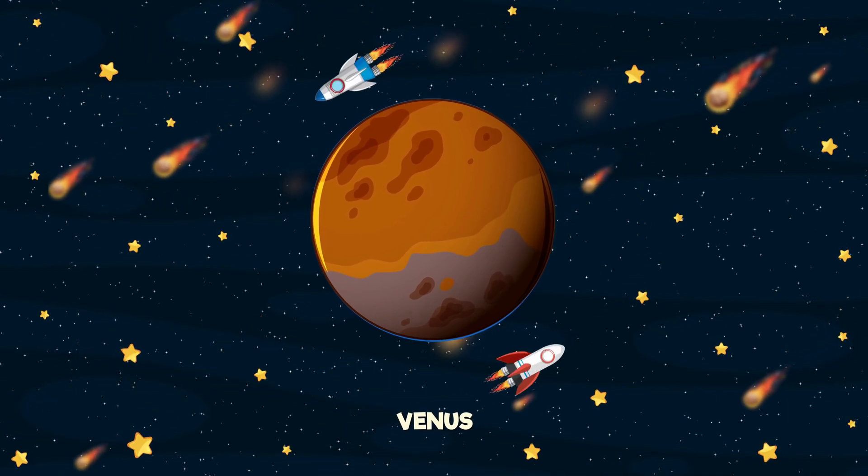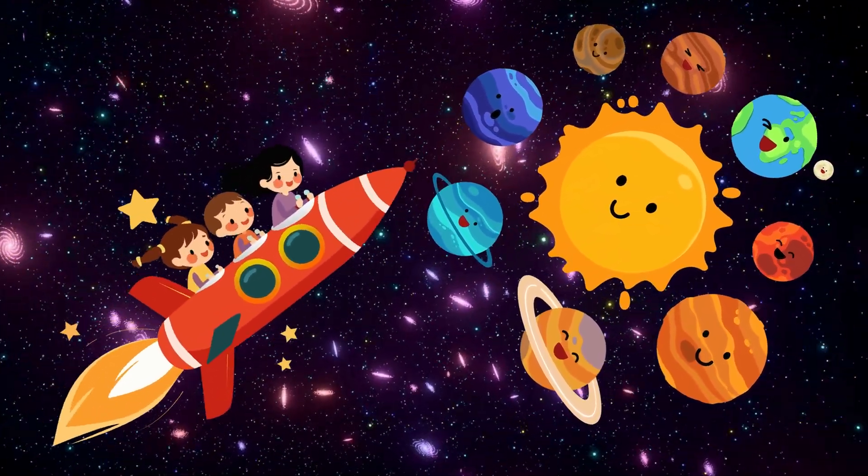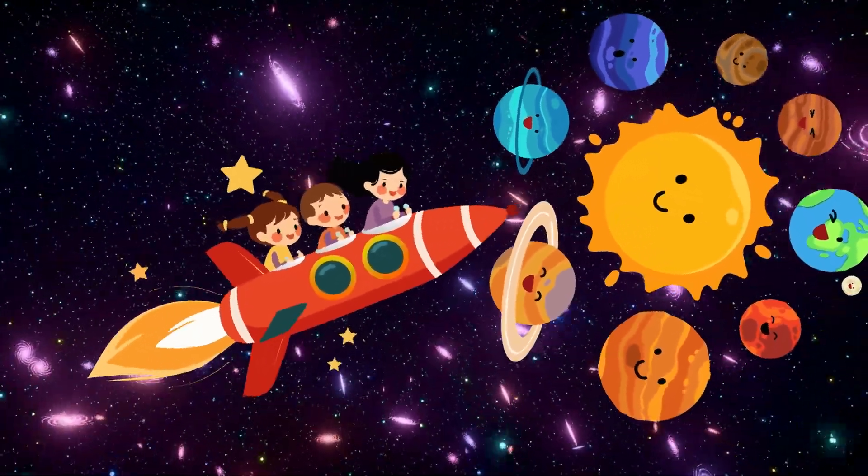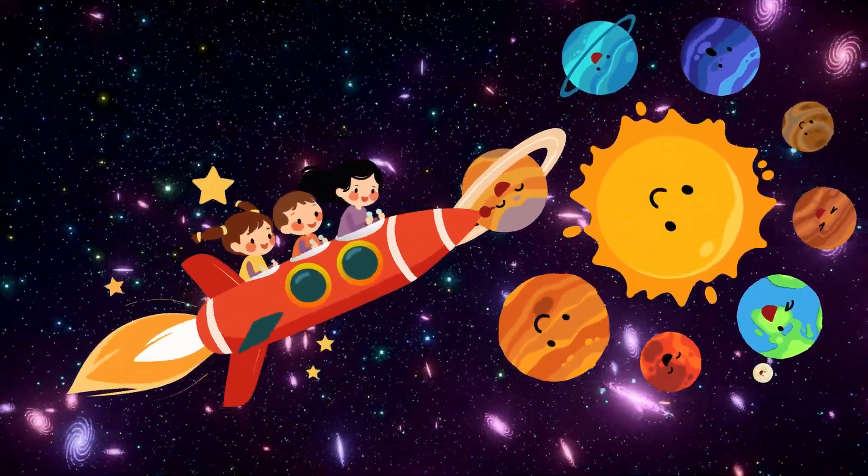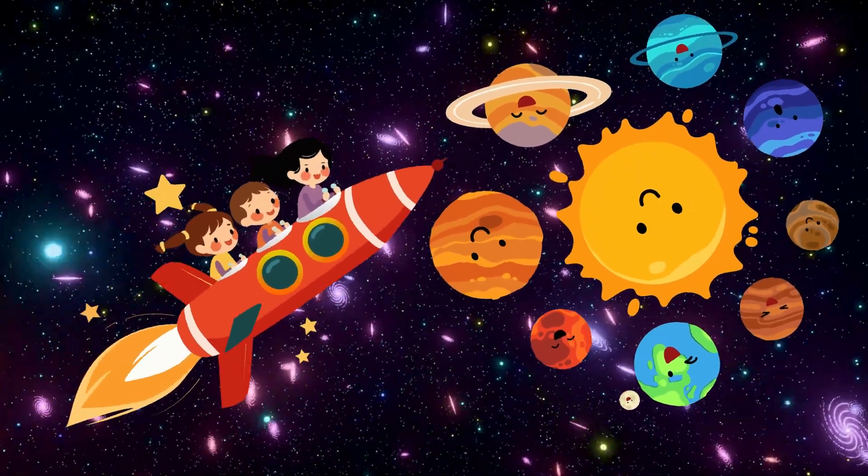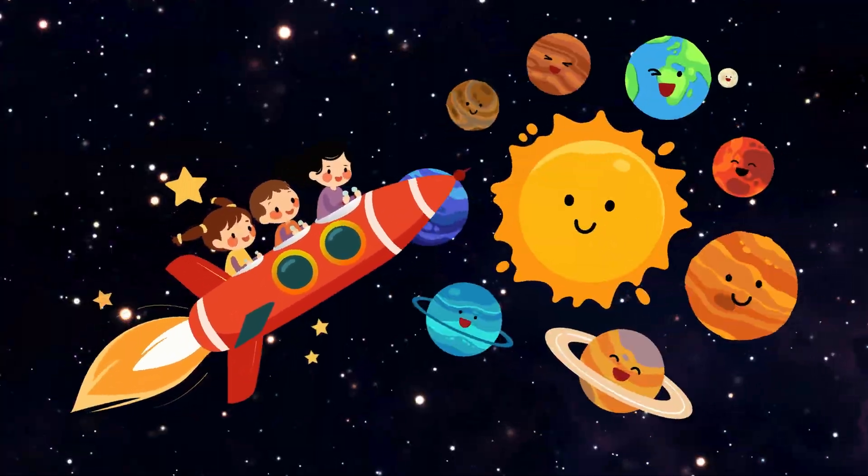Super hot clouds with acid rain, spinning backwards, now that's insane. Let's fly through space, come take a look. Eight planets spinning round just like a book. Mercury to Neptune dancing in a line, sing the planet boogie, it's spacey fine.